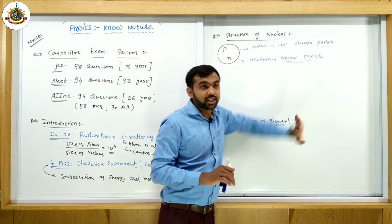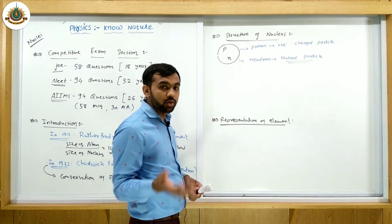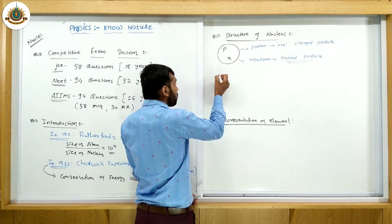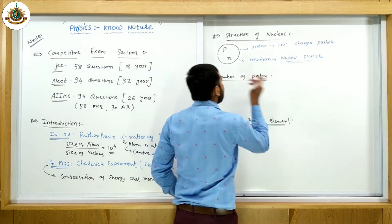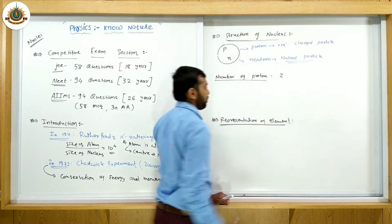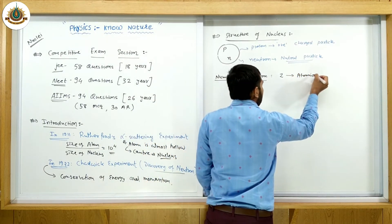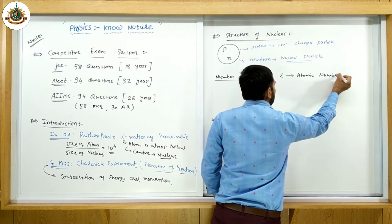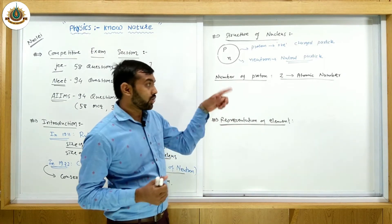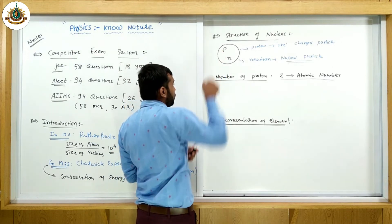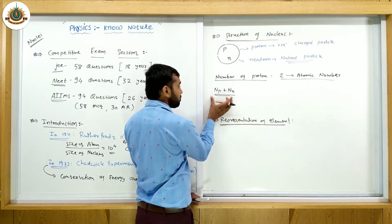The atom contains three particles including the electron, but here we focus on protons and neutrons inside the nucleus. The number of protons inside the nucleus is generally denoted by Z, and Z is also called the atomic number. So Z equals the number of protons equals the atomic number. The number of protons plus the number of neutrons together represent the nucleons.